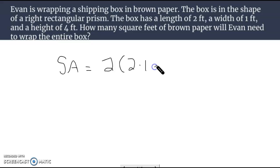Two times one, two times four, and then one times four. Putting all this together in the calculator, I think we get 28 square feet of the brown wrapping paper.